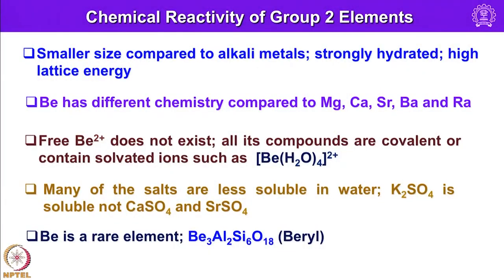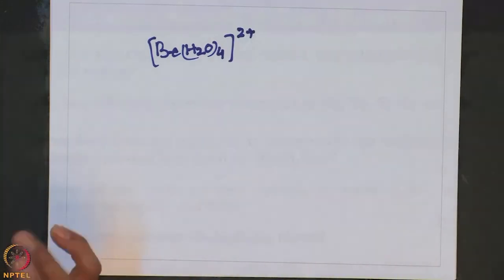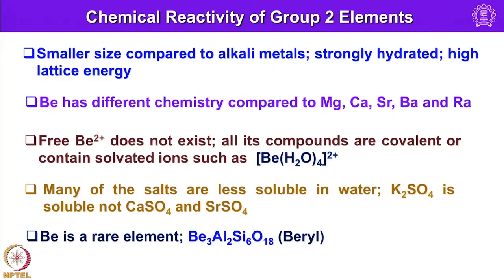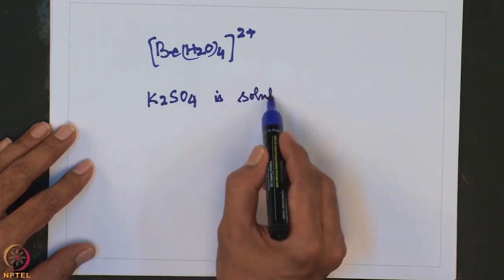Continuing with the chemical reactivity of group 2 elements: alkaline earth metals have smaller size compared to alkali metals, are strongly hydrated, and have high lattice energy compared to group 1 elements. Beryllium has distinctly different chemistry from its heavier congeners — free Be2+ ion does not exist in isolation; all its compounds are covalent or contain solvated ions. Many group 2 salts are less soluble in water.